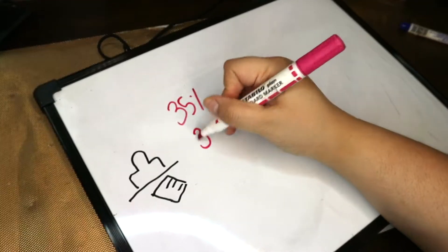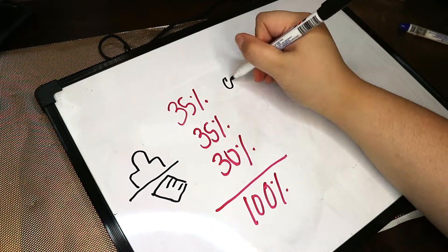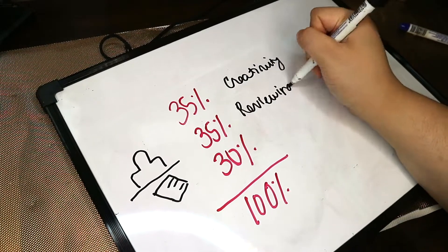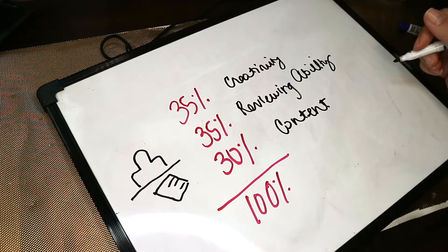Cathy Dolls representative will be judging your video on 35% creativity, 35% reviewing ability, and 30% content, which equates to 100% obviously.